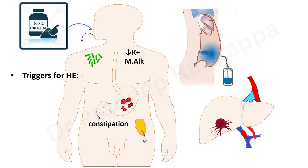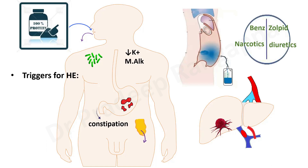Drug-related triggers include diuretics causing hypovolemia, sedatives like benzodiazepines, non-benzodiazepine sedatives like zolpidem, opioids, and alcohol — since many decompensated patients may have concomitant alcohol use. Triggers can be classified as drug-related, liver-related, systemic-related, and metabolic-related, to encompass all causes.